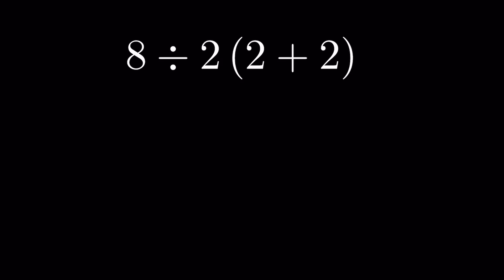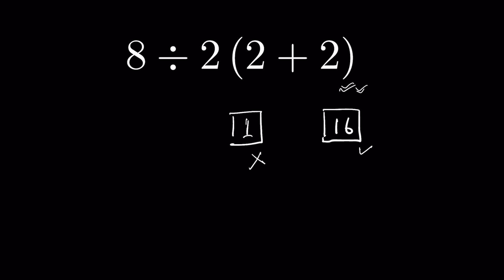8 divided by 2 parenthesis 2 plus 2 — what is the correct answer? Many will say 1 and many say the answer is 16. This viral question has confused many seniors. It is a primary school question, but many of us make mistakes solving it. Why is 1 not the correct answer, and why is 16 the correct answer?